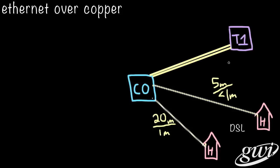Now, T1 speed is static at 1.5 megabits per second. It's also symmetrical, where the download speed and the upload speeds are the same. So for this business, they can get the 1.5 for the download and 1.5 for the upload.